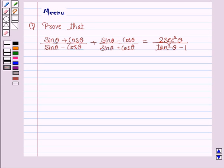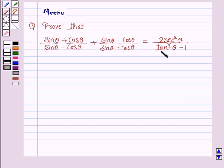Hello students, let's work out the following problem. It says: prove that (sin θ + cos θ)/(sin θ - cos θ) + (sin θ - cos θ)/(sin θ + cos θ) is equal to 2 sec²θ / (tan²θ - 1).